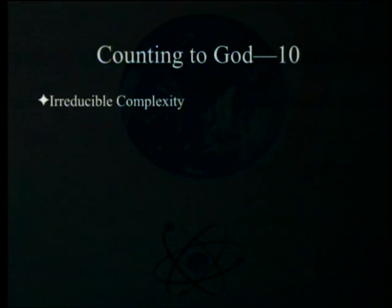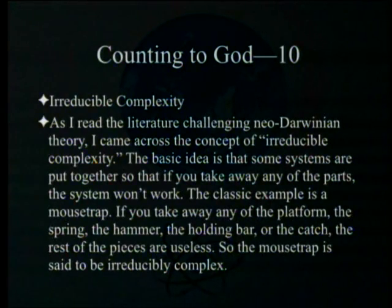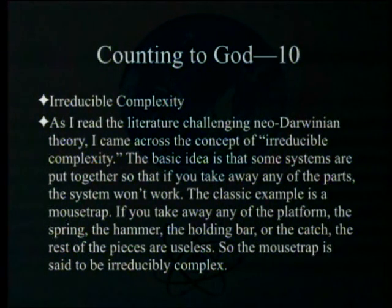As we saw in chapter 8, a ball of marbles one-half inch in diameter extending 50 light years — 600 trillion miles — from Earth has about 10^60 marbles. We haven't even reached 10^63, let alone 10^77. Moving on: irreducible complexity. As I read the literature challenging neo-Darwinian theory, I came across the concept of irreducible complexity.